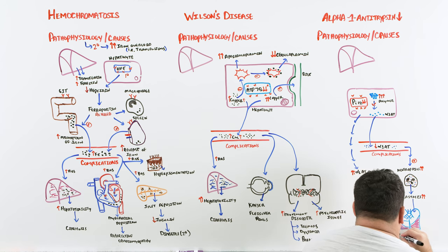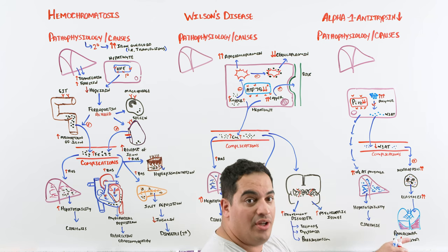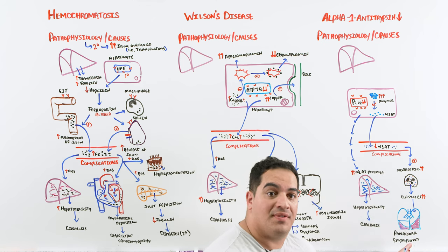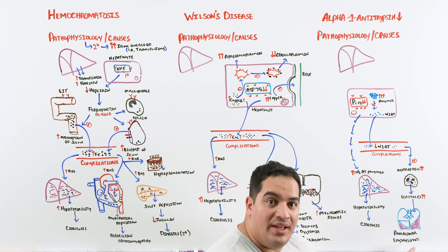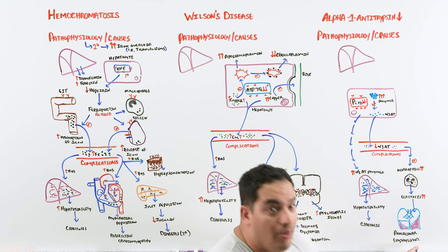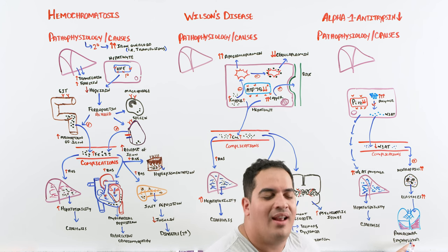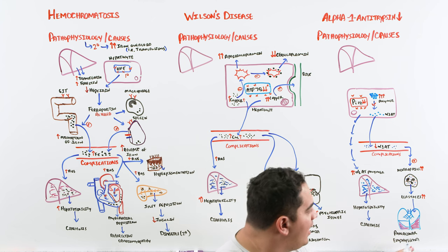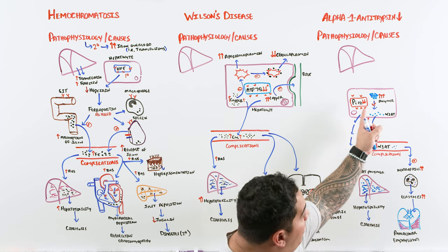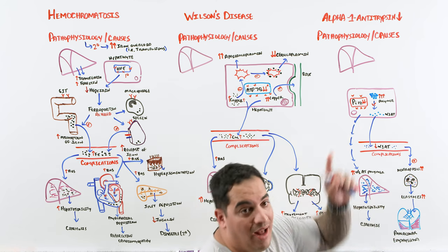The big thing to watch for is a young patient who develops features of COPD — dyspnea, wheezing, shortness of breath, complications like respiratory failure or pneumothorax, pulmonary hypertension, or right heart failure — in combination with underlying liver disease. In a young patient with COPD and underlying liver disease, you should definitely think about alpha-1 antitrypsin deficiency.